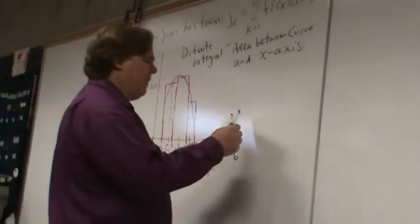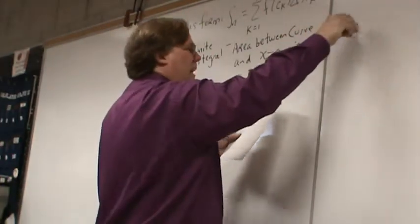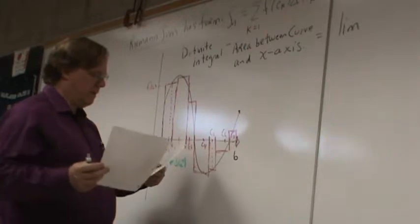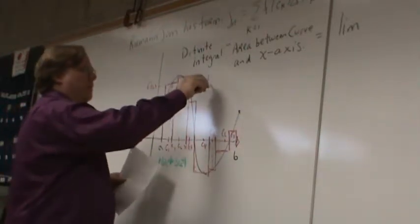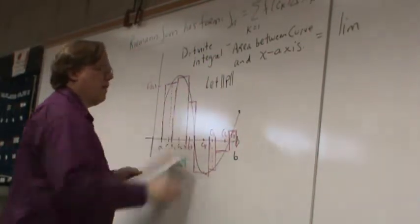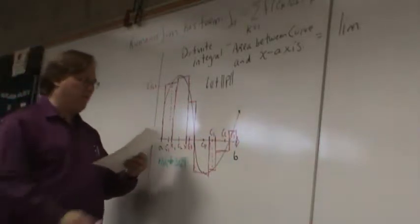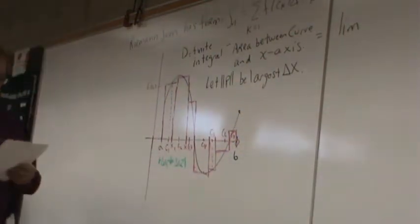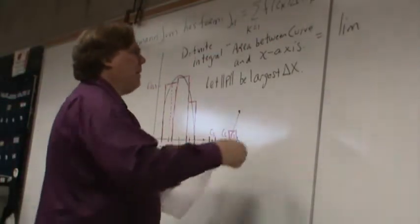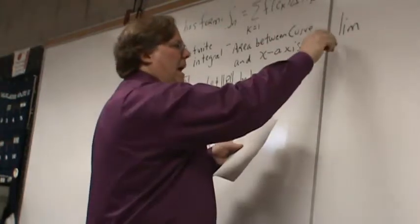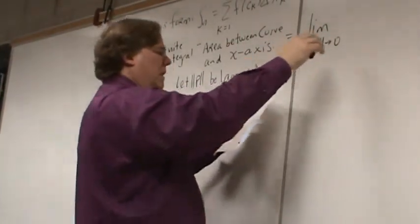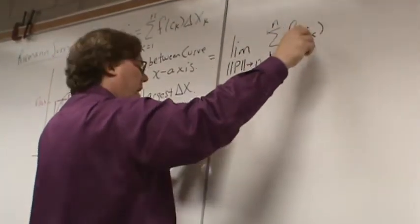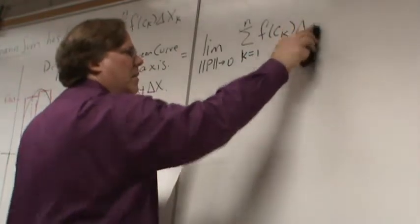This area gets a name. Let the absolute value of P be the largest delta x. Then the definite integral ends up being the limit as the absolute value of P approaches 0 of the sum as k goes from 1 to n of f of C sub k times delta x sub k.